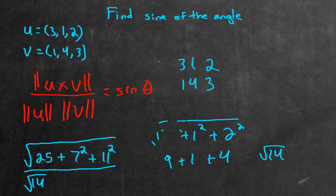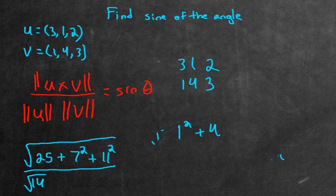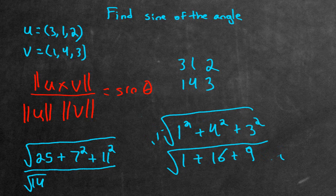Let's do the v vector. Find the length of the v vector now. That's going to be 1 squared, add 4 squared, add 3 squared. Square root of all of that, which is going to give us 1, add 16, add 9. Square root of all of that, which happens to be square root 26.